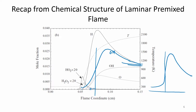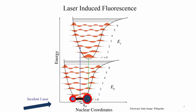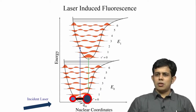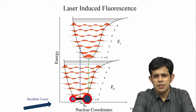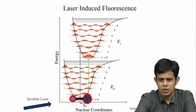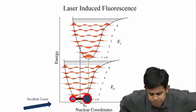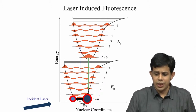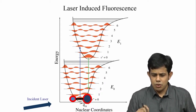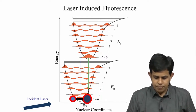From the OH distribution we can find how the local flow field looks and the extent of reaction. Measuring OH has been a very important activity of combustion researchers for quite some time. The concentration of OH — the hydroxyl radical — can be measured using the technique called laser induced fluorescence (LIF). We will use this technique to measure the concentration or mole fraction of OH.